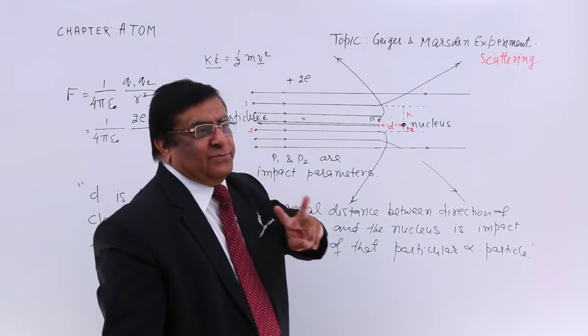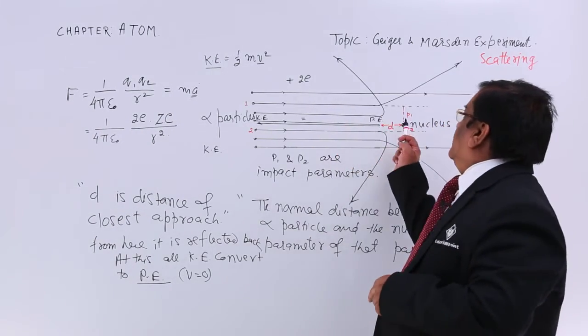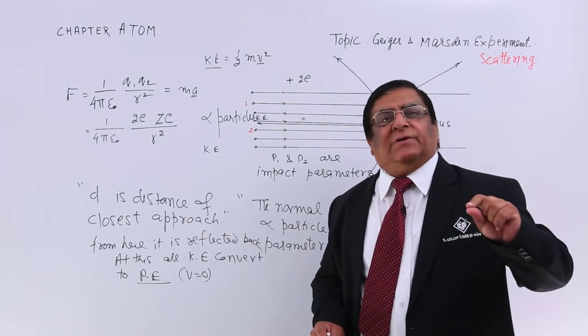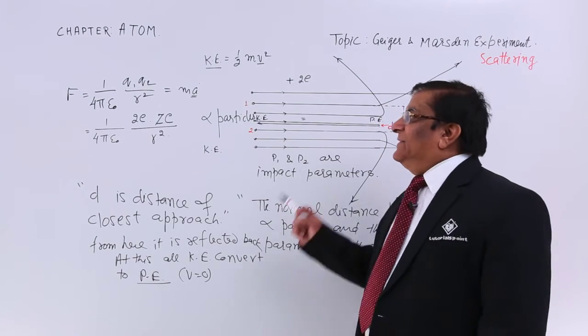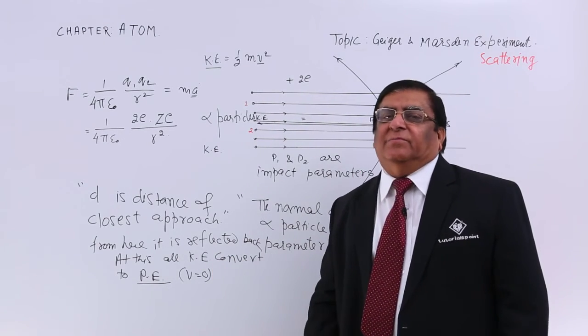So, we have learnt two terms here. One is impact parameter, the distance and other is the distance of closest approach. At this distance of closest approach, the kinetic energy become 0.